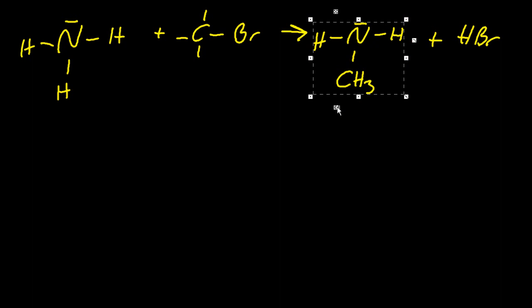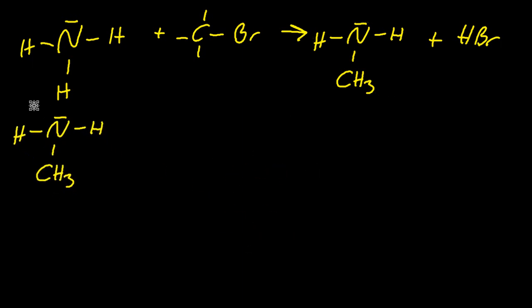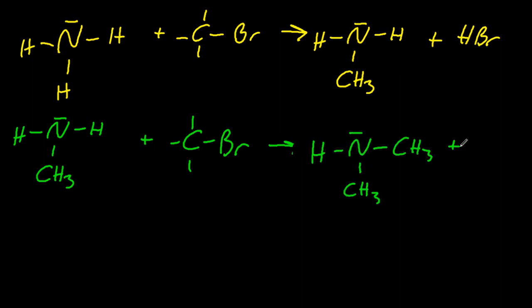Now we've seen that before in the previous reaction, but it can go and repeat itself on and on. So if I move this methyl amine down, there, finally found the right button. And then add in some more bromomethane. Then I'm going to end up with dimethylamine or dimethyl amine. So I've swapped another hydrogen for a methyl.